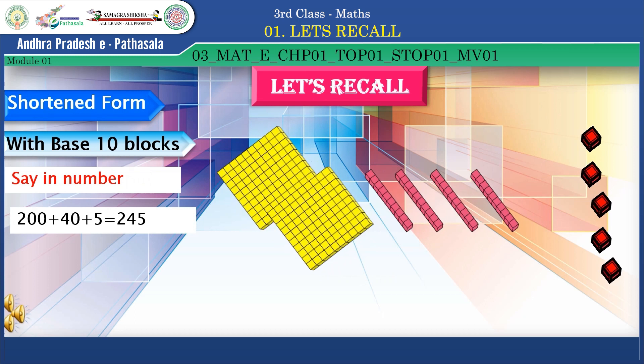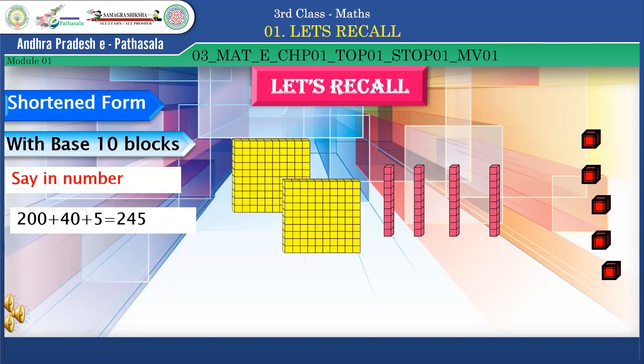Children, here squares, bars, and blocks are there. Observe and count. First, how many hundreds? Yes, two hundreds. How many tens? Yes, four tens. How many blocks? Yes, five blocks. Total: two hundred and forty-five. Wow, super, super children!